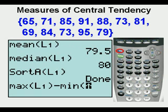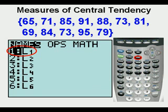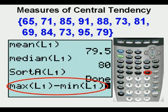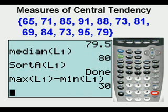Now enter L1 by pressing SECOND, then STAT for the LIST menu. Note that L1 is already highlighted. Press ENTER. Press the closing parenthesis. Note that we have the expression of the maximum value of the list minus the minimum value of the list. That should be the range. Press ENTER. We see that the range of this list is 30, the difference between the highest and the lowest.